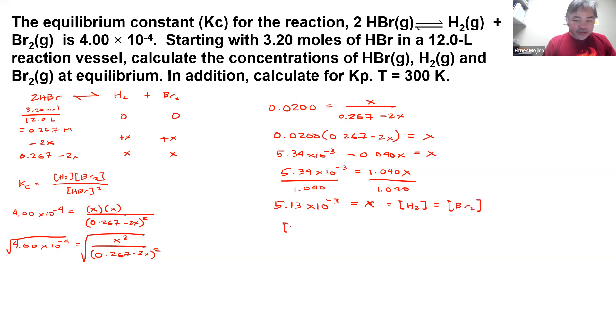Now to get the HBr, you have 0.267 minus 2 times 5.13 times 10^-3, so this is around 0.257.